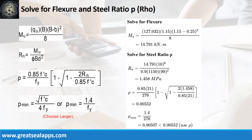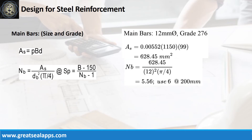The maximum moment is 14.791 kN·m. Given resistance factor equals 0.9, B equals 1,150 mm, and D equals 99 mm. The beam design ratio RN equals 1.458 MPa and reinforcement ratio rho equals 0.00552. The area of steel for main bars is 628.45 square millimeters.